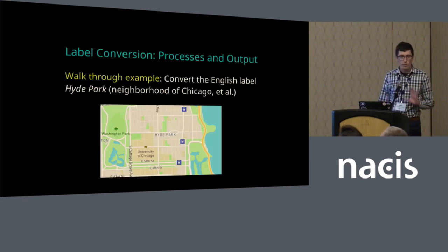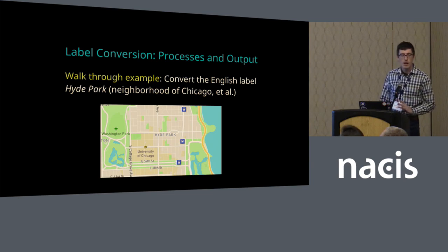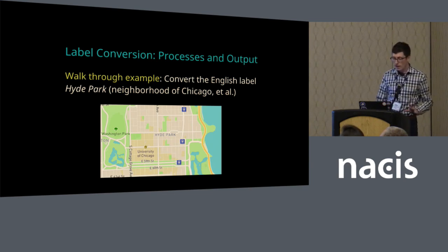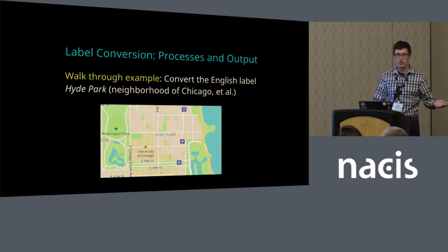Let's walk through very briefly an example of converting an English place name to Chinese. I'll convert the name Hyde Park. I went to University of Chicago, so I always associate that as being a neighborhood in Chicago, although I hear there's one in London somewhere.